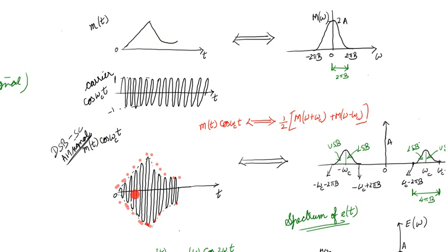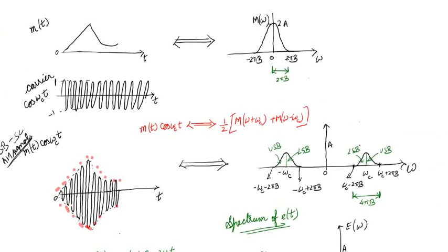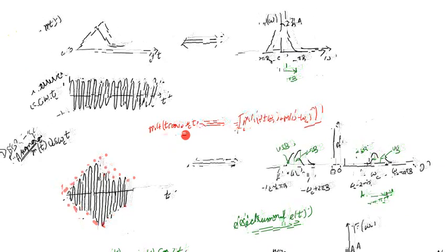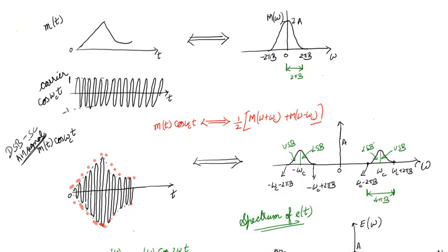Now let us look at the spectrum. We know that the product of the message signal with cos(ωc·t) gives a spectrum of one-half times [M(ω + ωc) + M(ω − ωc)]. This relationship can be obtained from the Fourier transform — you can watch the video linked in the description.